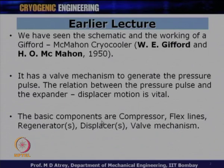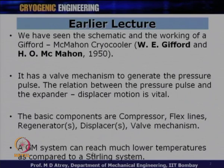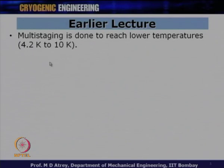The basic components of the GM cryocooler are compressor, flex lines, regenerator, displacer, valve mechanism, etc. A GM system can reach much lower temperatures compared to a Stirling system. The difference is that GM has a valve and runs at a very low frequency of around 1 to 2 Hz, while Stirling operates without a valve at a much higher frequency. In GM cryocoolers, multi-staging is done to reach very low temperatures of around 4.2 K, which is the helium boiling point, and up to 10 K.